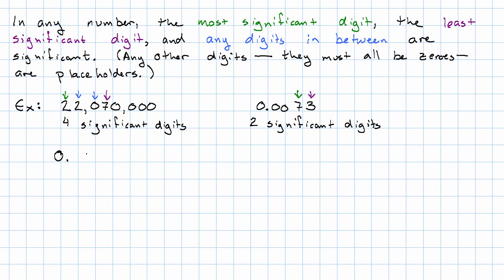One more example: 0.00400. The most significant digit is the 4 — leftmost non-zero. There is a decimal point, so the least significant digit is just the last digit overall, the final zero. There is one digit in between. So this number has three significant digits.